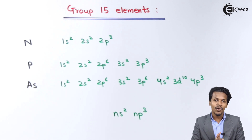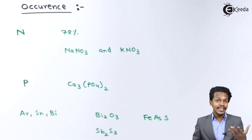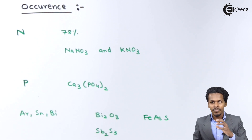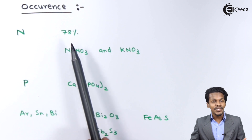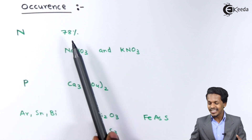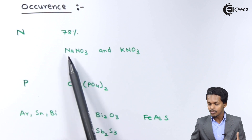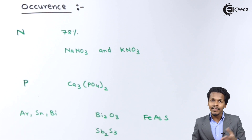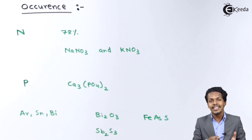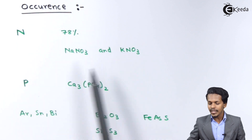Now let me talk about the occurrence of these elements. Nitrogen is in a gaseous state while the other elements are in solid states. Nitrogen is a diatomic molecule, and 78% of the earth's atmosphere is covered with Nitrogen. It is also found in the combined state as nitrates — such as sodium nitrate and KNO3 (potassium nitrate). In living bodies, Nitrogen is present in the form of nucleic acid and proteins, as proteins and amino acids also consist of Nitrogen.